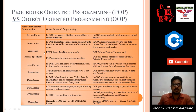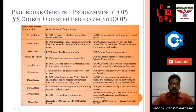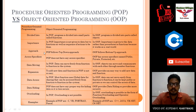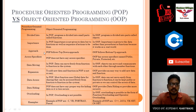The next difference is approach. Procedure oriented programming uses a top-down approach, meaning the sequence of execution is from top to bottom. Object oriented programming follows a bottom-up approach, where the problem is solved from the bottom up.